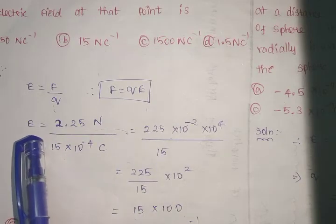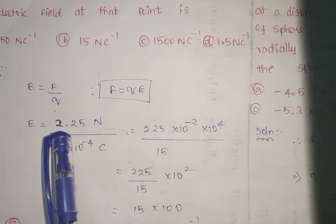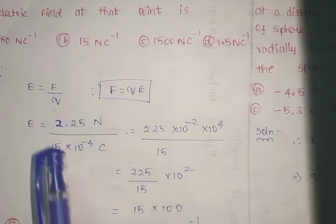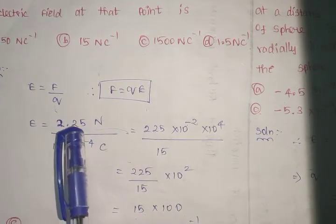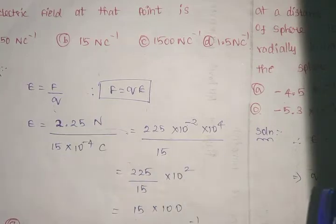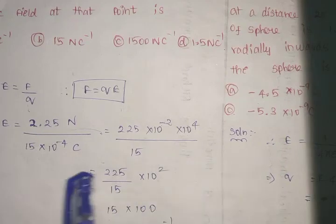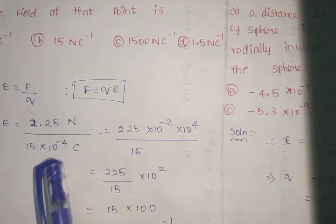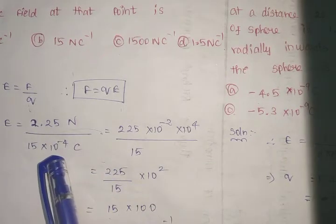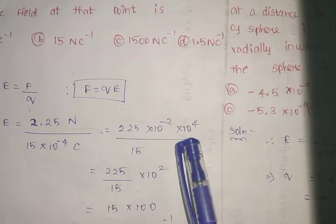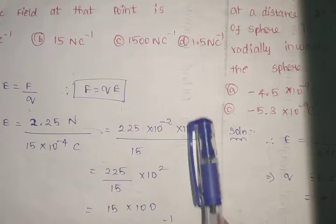I want the calculation in an easy manner, so I proceed to move two points to the right of 2.25, so 2.25 becomes 225 × 10^-2. Here in the denominator, we have 15 × 10^-4. I convert this into positive, so it comes up and becomes 10^+4. So minus 2 and plus 4 will become 10^2.